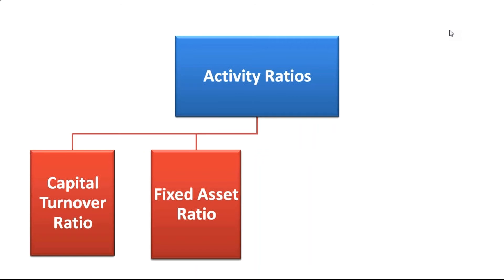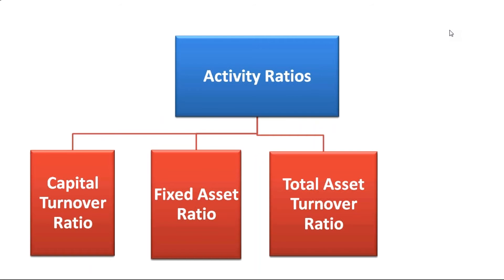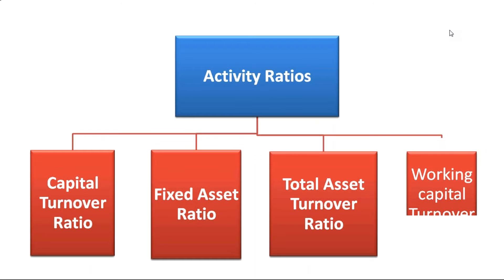An activity ratio basically compares sales with assets. Let's see the classifications: we'll be talking about capital turnover ratio, fixed asset ratio, total asset turnover ratio, and working capital turnover ratio, which we have already discussed.